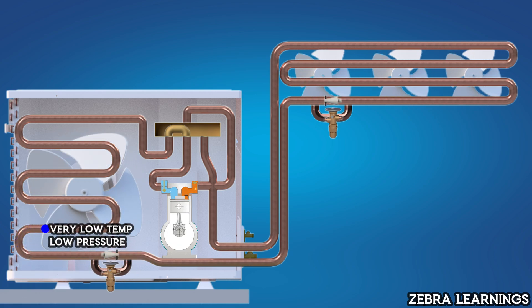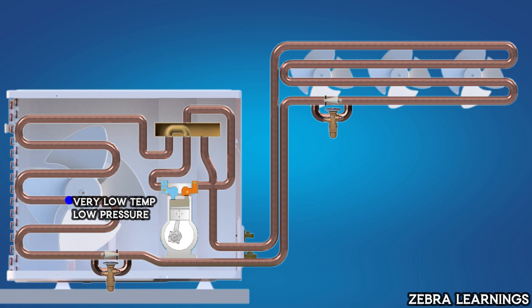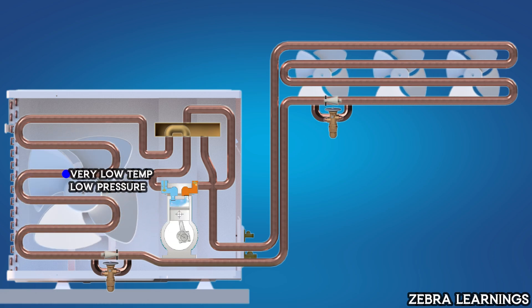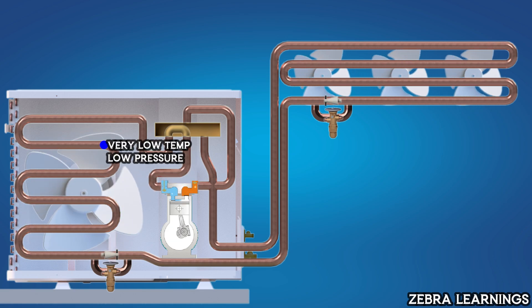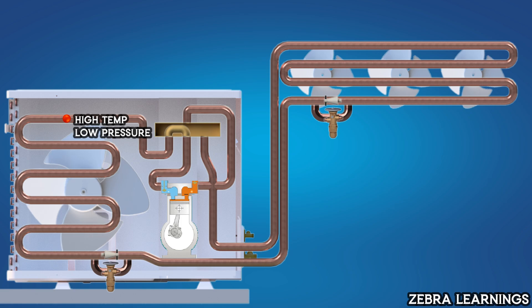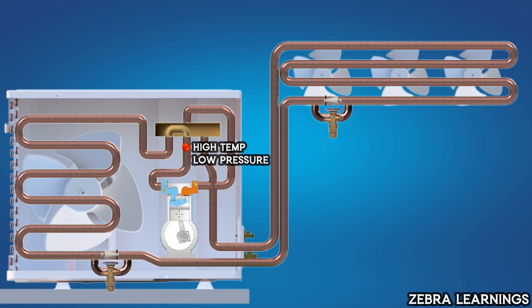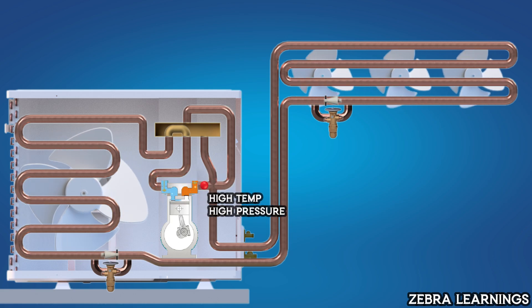When the refrigerant enters the outdoor coil, the outdoor fan blows air over the coil. The heat from the outdoor air is absorbed by the refrigerant, increasing its temperature and evaporating it into a vapor. This vaporized refrigerant re-enters the reversing valve and flows back to the compressor, continuing the cycle.